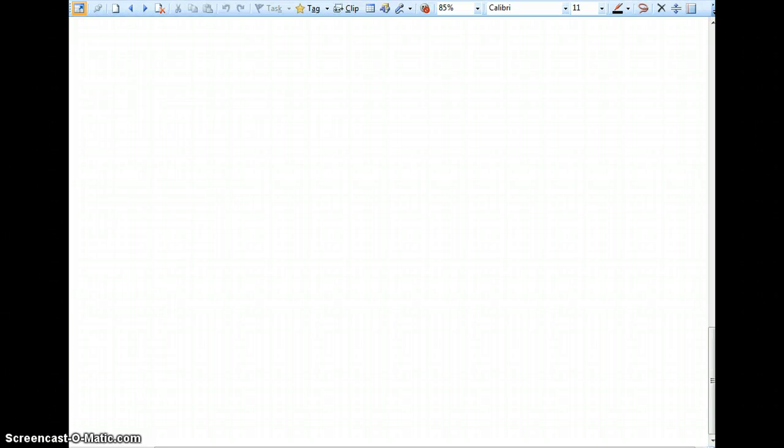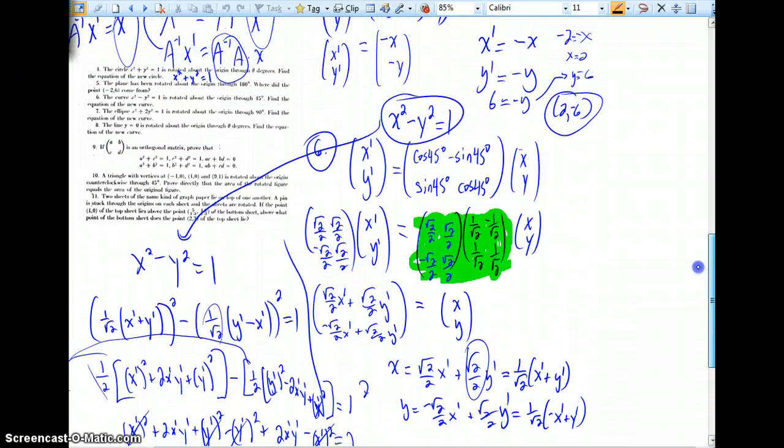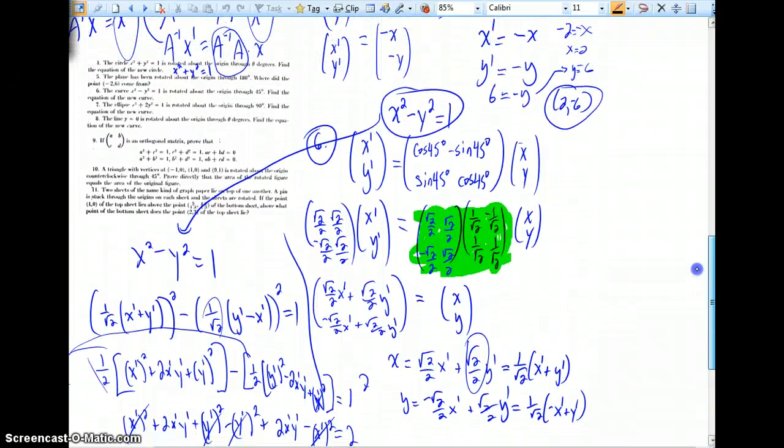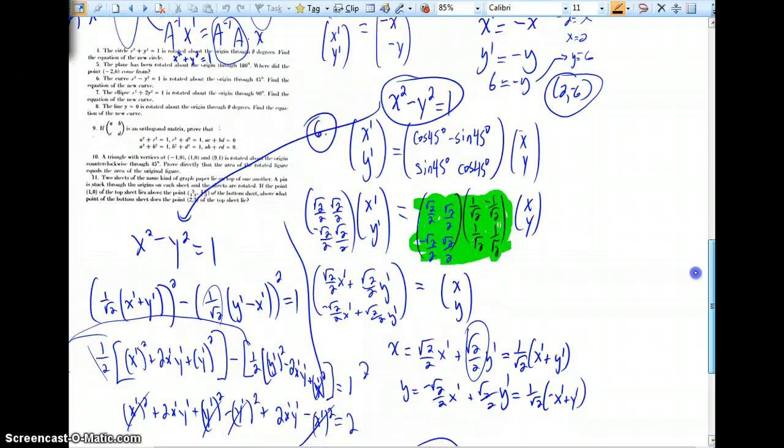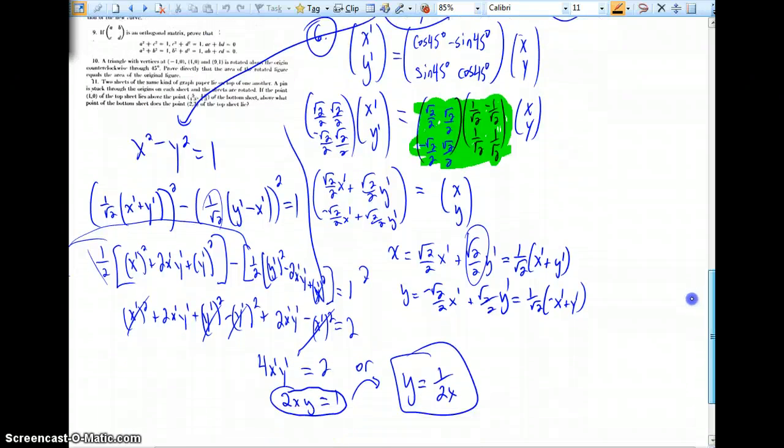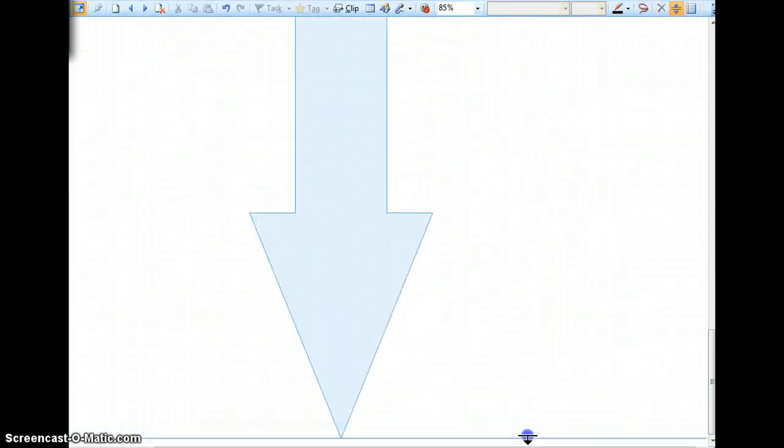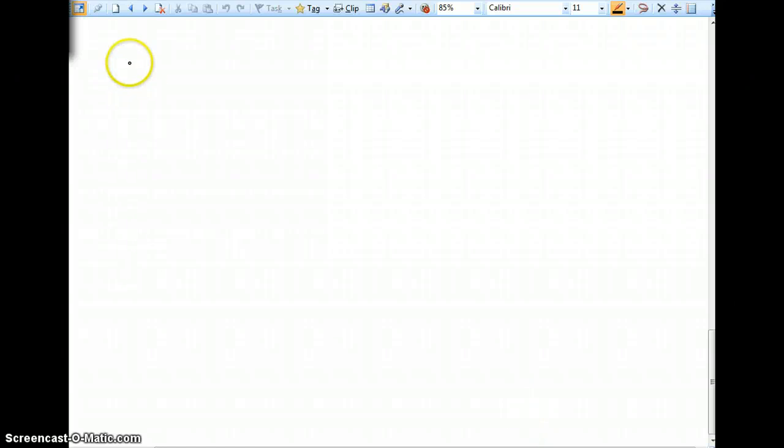Okay, rotations part 3. We left off with number 7. Number 7 we could refer back to up here. We're saying the ellipse x squared plus 2y squared equals 1 is rotated about the origin 90 degrees.